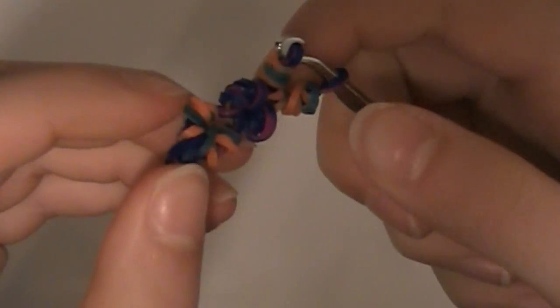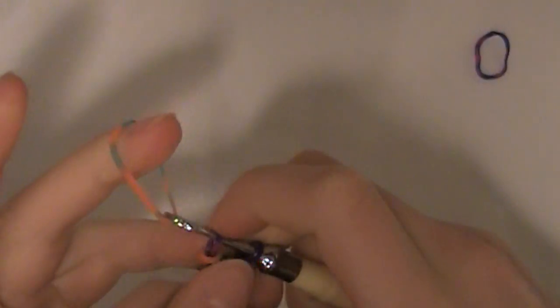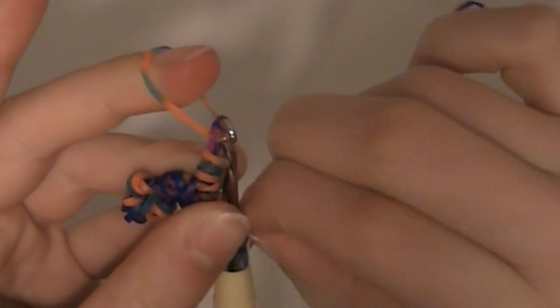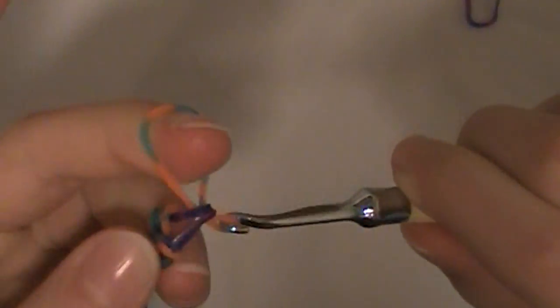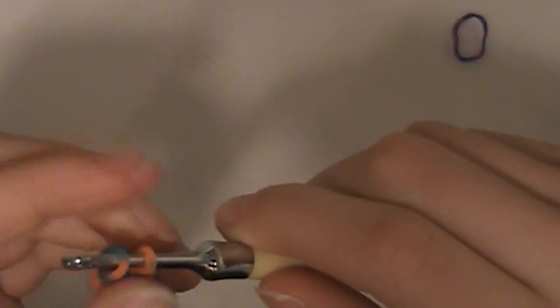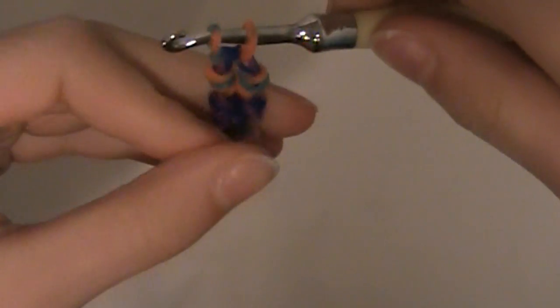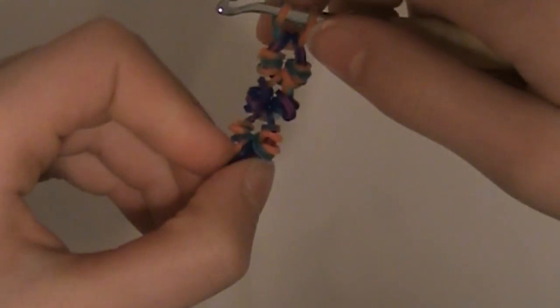There. And then we are going to put on another band. By hooking it there. And sliding both of these off of the hook and on to the orange band. And put the other end of the orange band on. Alright, so I'm going to stop the camera and finish my bracelet. And you can pause the video and finish yours. And I'll be back on at the end to show you how to finish it.